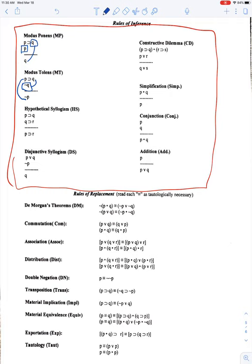Hypothetical syllogism is pretty straightforward. The Q's kind of cancel each other out and then you want to drop these down. Disjunctive syllogism, you need the negation of one side and then you can grab the other side.